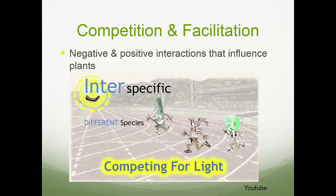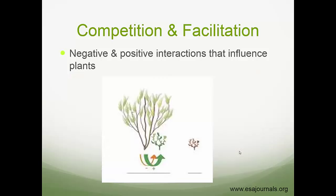Different species have different levels of ability to compete for light. In this figure, what looks like a conifer species may be a better competitor than this broadleaf species when competing for light. Competition is those negative interactions where whoever is the best competitor may win. Whereas facilitation is positive interactions — this larger plant, maybe a shrub, is facilitating this smaller plant, perhaps in a very arid ecosystem by providing shade.